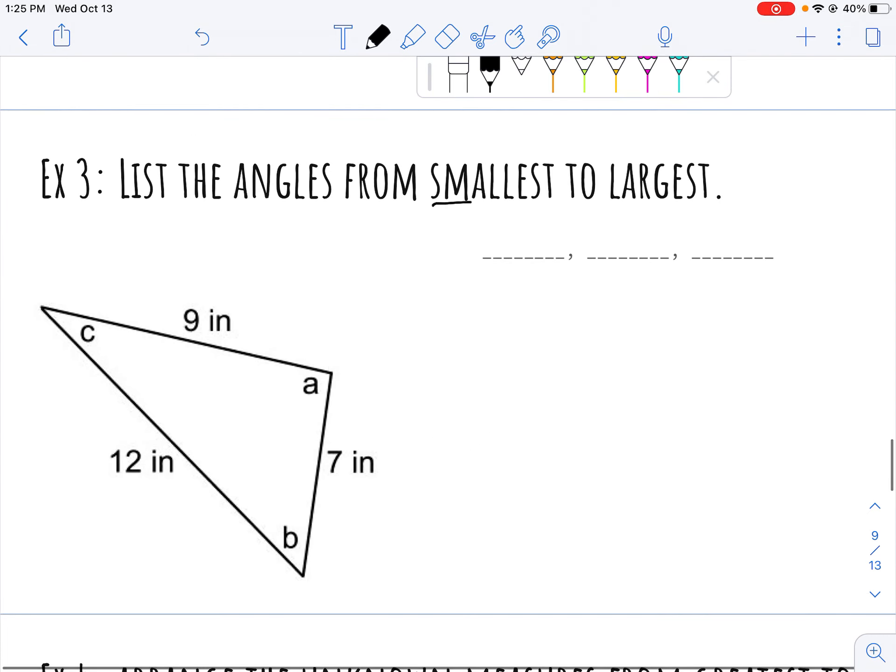I can do the same thing with my angles, this time I'm going smallest to largest. I'm going to find my smallest side 7, C is across, my medium is 9, B is across, which leaves just A as my largest angle.